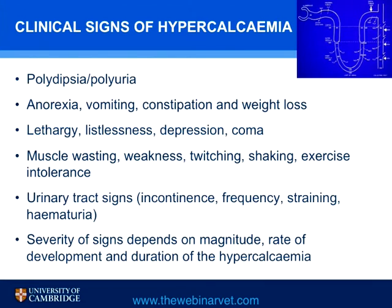The clinical signs of hypercalcemia are principally polydipsia and polyuria. Polyuria occurs because calcium is laid down in the basement membranes of the collecting tubule of the nephron, making it insensitive to antidiuretic hormone. The urine that passes out is therefore dilute and unconcentrated, and there is a compensatory polydipsia to compensate for that polyuria.